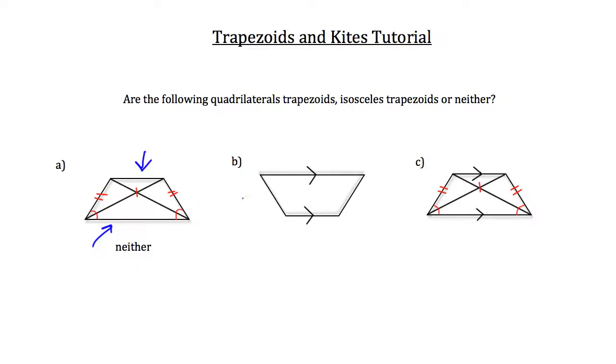Now let's take a look at B. In B we can see that the two bases are parallel to each other. We don't know anything more about it. So knowing just that, that would tell us this quadrilateral is a trapezoid.